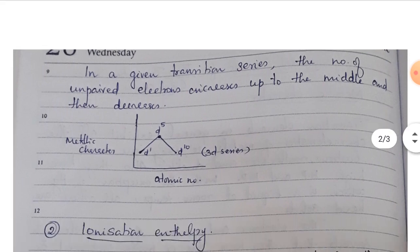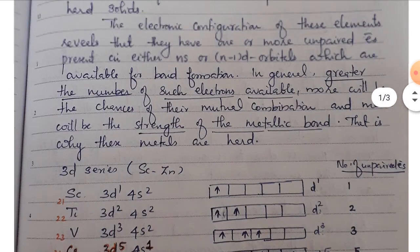In a given transition series, the number of unpaired electrons increases up to the middle and then decreases. The D1 configuration has one unpaired electron, D5 is equal to the maximum number of unpaired electrons, and D10 configuration has the minimum. So metallic character depends on the number of unpaired electrons.